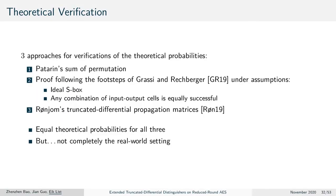Besides Patarin's sum of permutations, we employed two further approaches to verify our theoretical probabilities. First, we used the proof method following the footsteps of Grassi and Rechberger, which had two assumptions: that the S-box was ideal, and that any combination of input and output positions is equally successful in our distinguishers. Second, we employed Rögnio's truncated differential propagation matrices, which yielded the same probabilities as our approach using the sum of permutations. In sum, we observed the same probabilities for all three approaches.